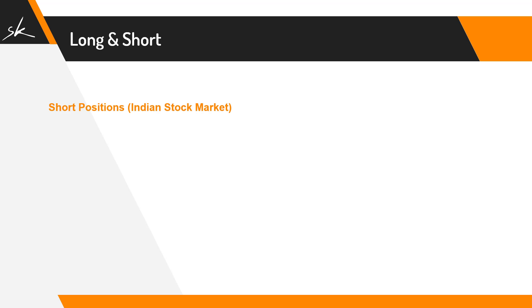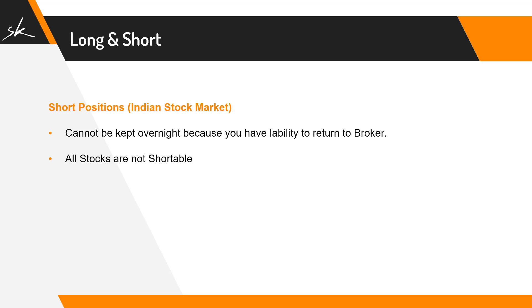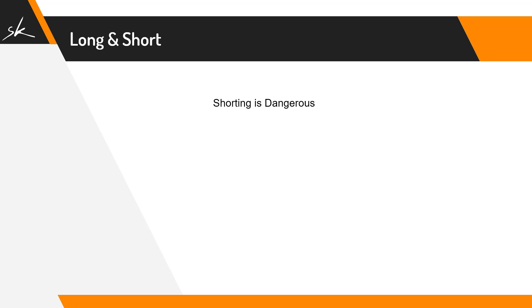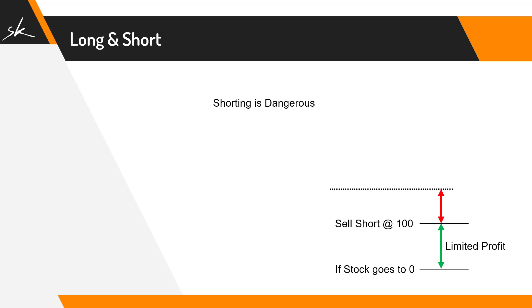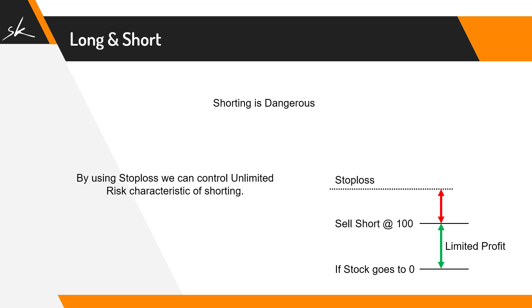A few things to remember: a short position in the Indian stock market cannot be kept overnight, because you have the liability to return the shares to your broker. Also, not all stocks are shortable — you can ask your broker for the list of stocks available for shorting. People often say shorting is dangerous: if you short at 100 rupees and the stock goes to zero, the maximum profit is 100 rupees, but if it moves up, the risk is unlimited. However, as long as you use a stop loss, you limit that risk, and that is why we don't have to be scared of short positions.